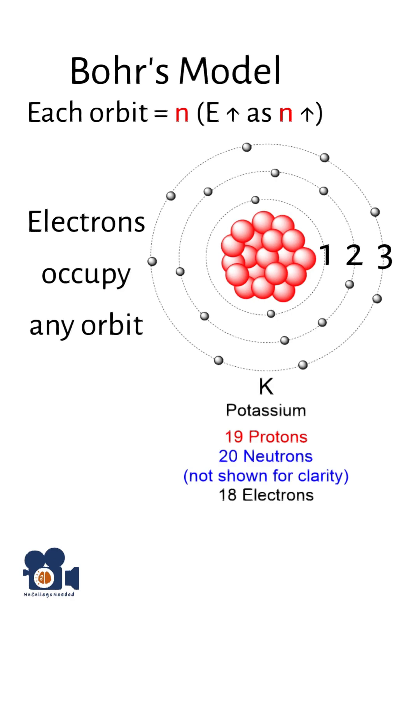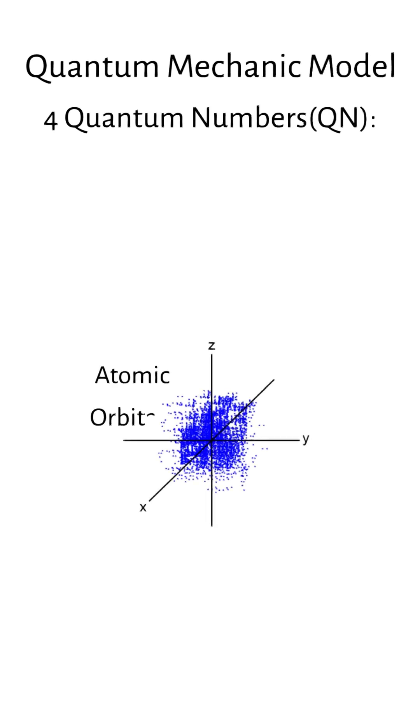However, Bohr introduced just one principal quantum number, N, to describe these levels. The revised quantum mechanic model uses four quantum numbers (QN) to describe the atomic orbitals.